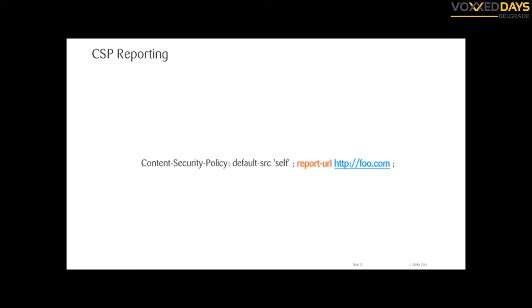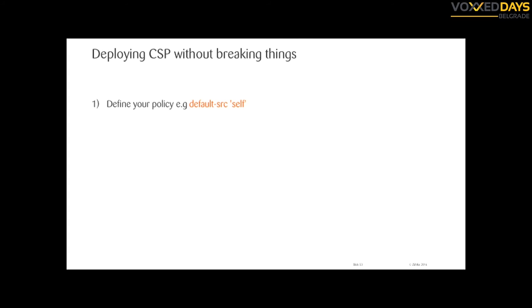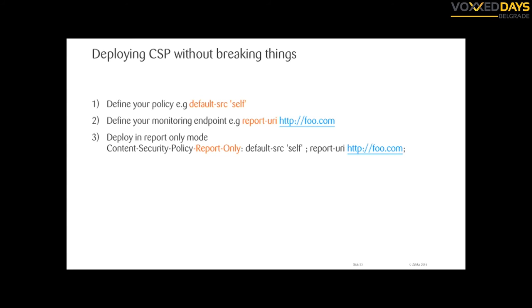With CSP you can also monitor violations on your website using the 'report-uri' directive. Every time a browser detects something that violates the policy, it will POST a JSON data structure so you can see what happened. When deploying, first define your default-src, define your report-uri, use report-only mode first, and then remove the report-only once you are sure everything works fine.